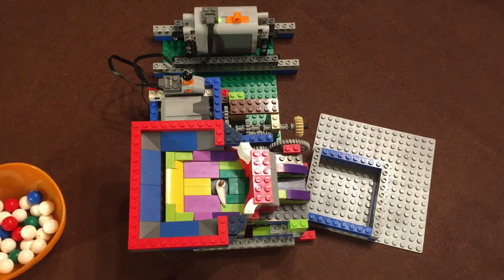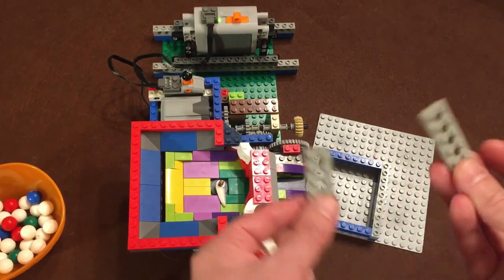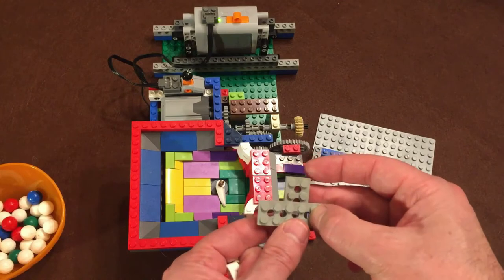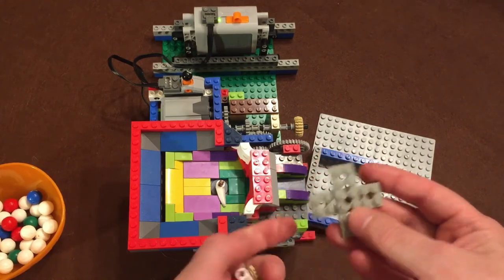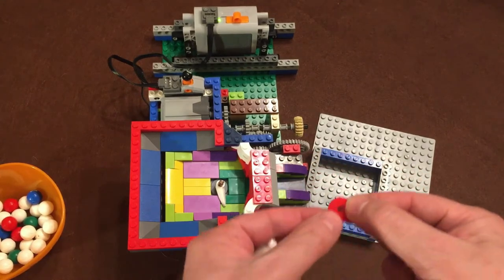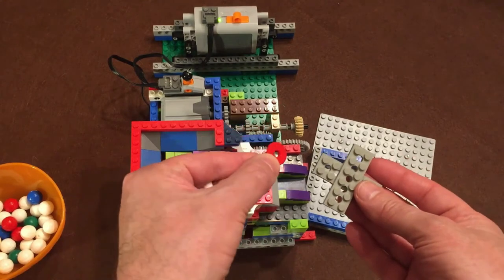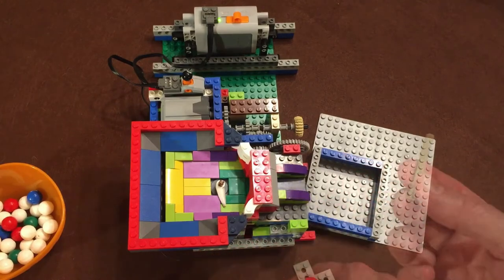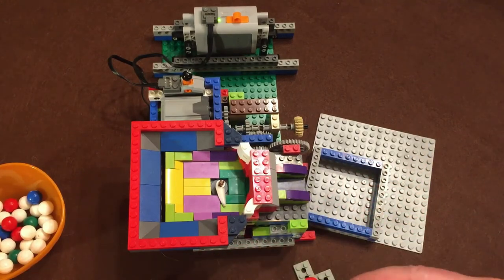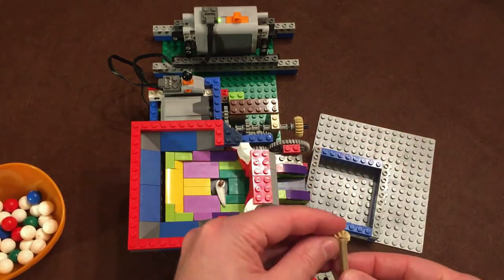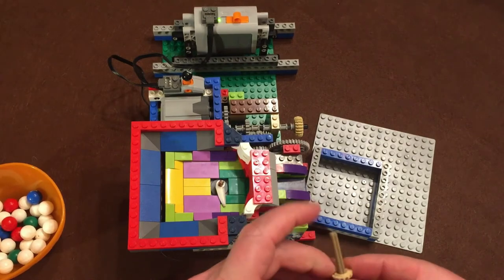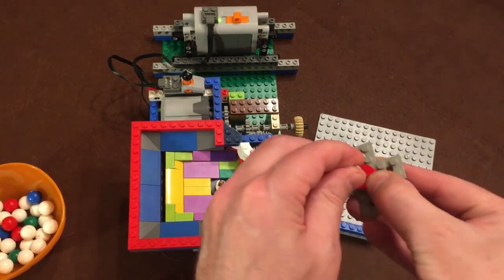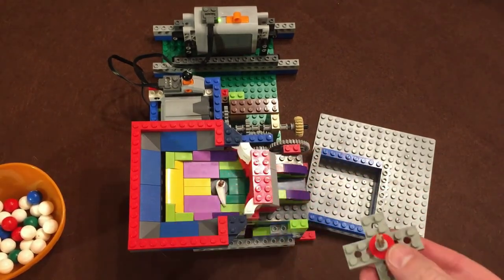Earlier, I kind of glossed over how the sweeper shaft is put together. So let me show you that now. I start with a pair of 2x6 technique plates that are attached in a cross pattern. Then on top, I add a 2x2 round tile with a hole in it. Next, I take a 5-stud axle with an end cap on it, and I add a bushing, then the 12-tooth bevel gear, and then this goes through the technique plates.